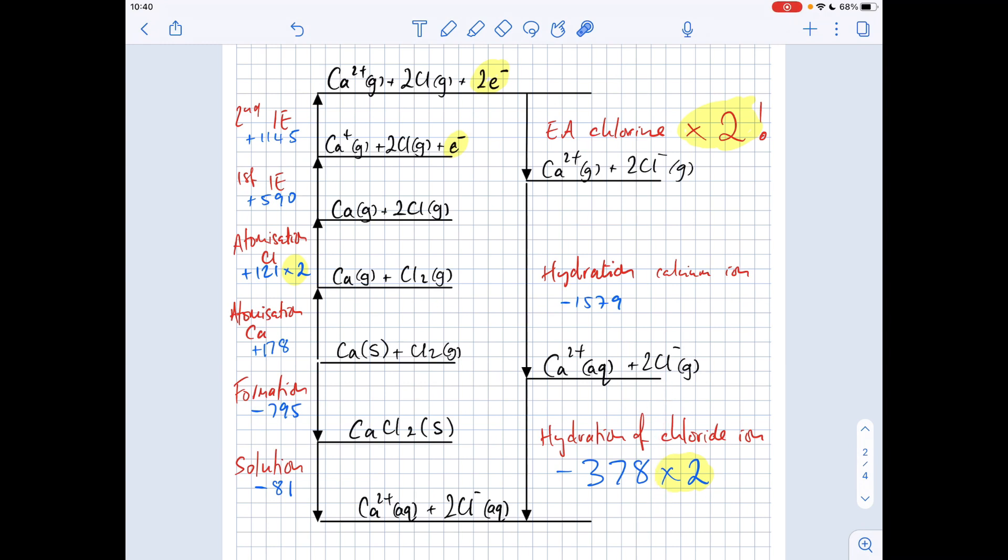And then the final thing we're going to do is hydrate the two chloride ions. And again, that's because there's two moles there, we're going to double that enthalpy change. OK, so that's the completed cycle. So we'll just talk about the calculation now to calculate this. And then I'll go through the numbers.